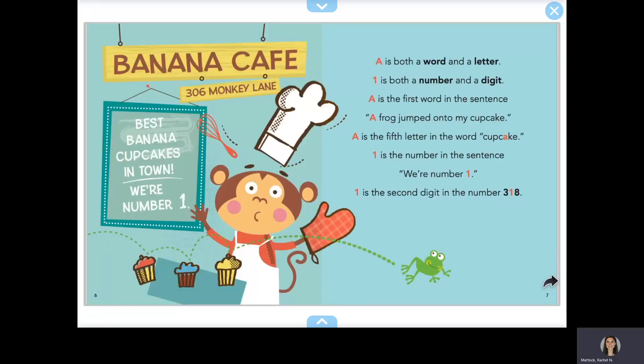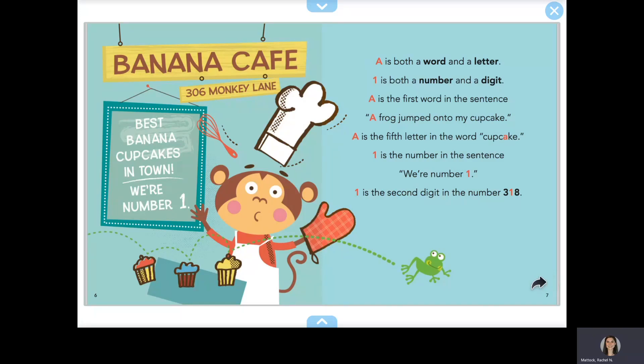A is both a word and a letter. One is both a number and a digit. A is the first word in the sentence, 'A frog jumped onto my cupcake.' A is the fifth letter in the word cupcake. One is the number in the sentence, 'We are number one.' One is the second digit in the number 318.